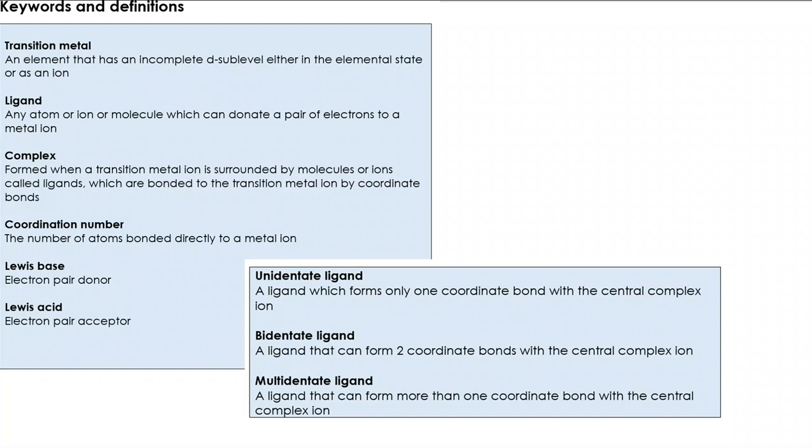Transition metal we spoke about in the last video. It's something that has an incomplete d sublevel in at least one of its ions. A ligand is something that can form a dative covalent bond with a metal ion that sits at the centre of a complex. A complex is formed when we take that transition metal ion and surround it by the ligands. However many coordinate bonds there are, that's the coordination number.